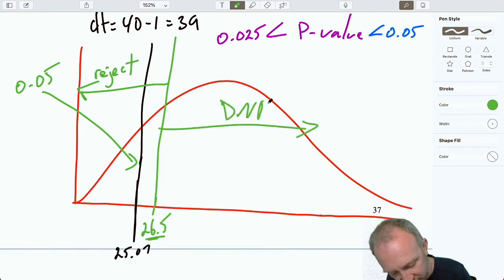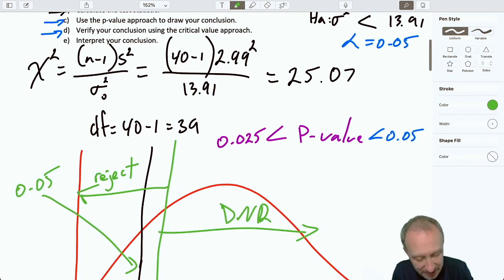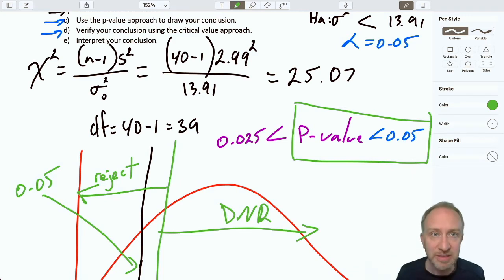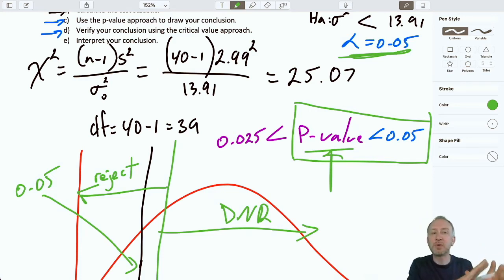That defines our rejection region for a lower tail test and our do not reject region for that lower tail test. Here I can see my test statistic is in that rejection region. It is smaller than that critical value, and as we would expect, we see a consistent result using the p-value approach. My p-value is less than alpha. Alpha still represents my level of comfort towards committing a type 1 error. My exposure to committing a type 1 error is less than what I would be comfortable with. Both our p-value approach and our critical value approach are leading us to reject the null hypothesis.